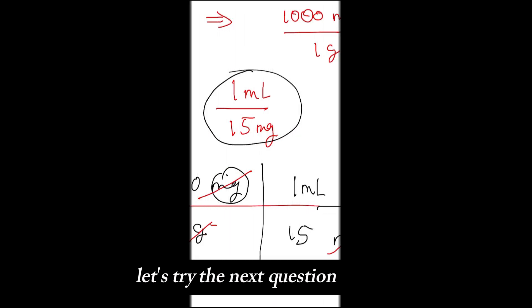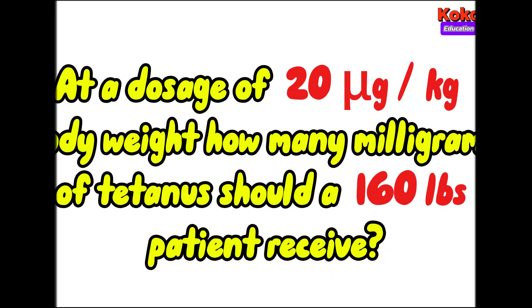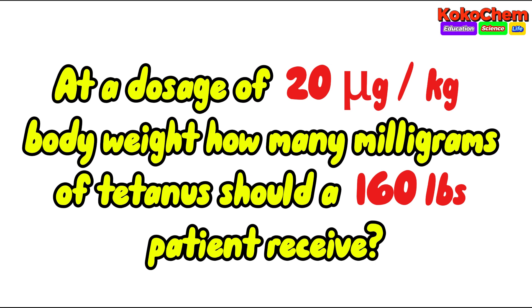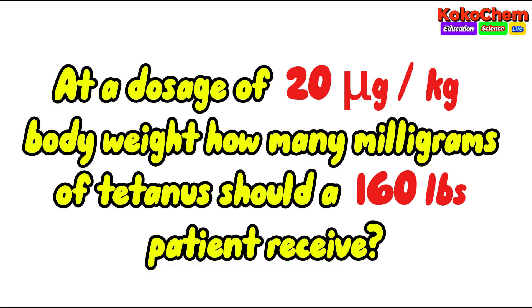Let's try the next question. At a dosage of 20 micrograms per kilogram body weight, how many milligrams of tetanus should a 160 pounds patient receive? First, you have to know the patient's body weight in kilograms.